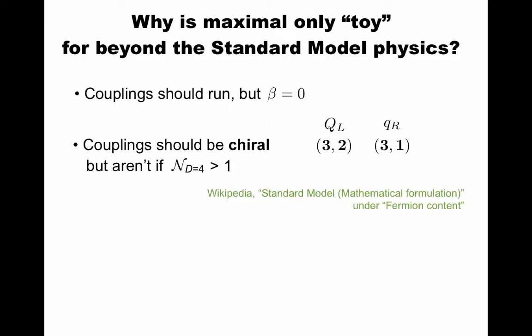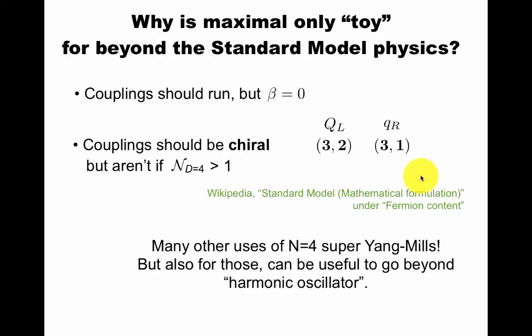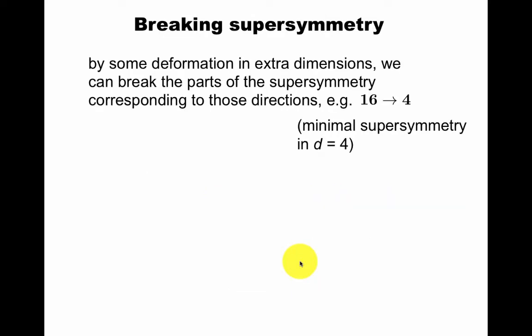Now what's special about this theory? Why do I say this is harmonic oscillator? It's like a toy model. In particle physics we usually want the couplings to run, but here the beta function is identically zero. That's an interesting feature, but it's maybe not such a useful feature, for example if you want to understand QCD. Couplings should also be chiral if you want to describe the standard model. The standard model has chiral gauge couplings, for example the left-handed quark is a 2 under SU(2), when the right-handed quark is not. This turns out to be inconsistent with extended supersymmetry, like N equals 4, because then the supercharge commutes with the gauge charge. There are many other uses of N equals 4, one should not emphasize too much these specifics of particle physics, but even for those it could be useful to go beyond this very basic harmonic oscillator, N equals 4. So we need to break supersymmetry.